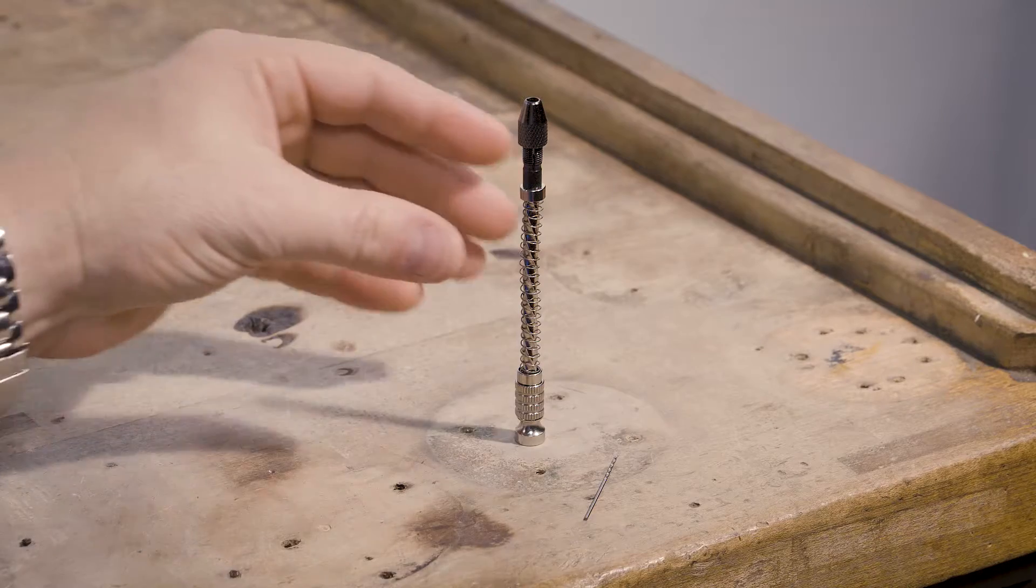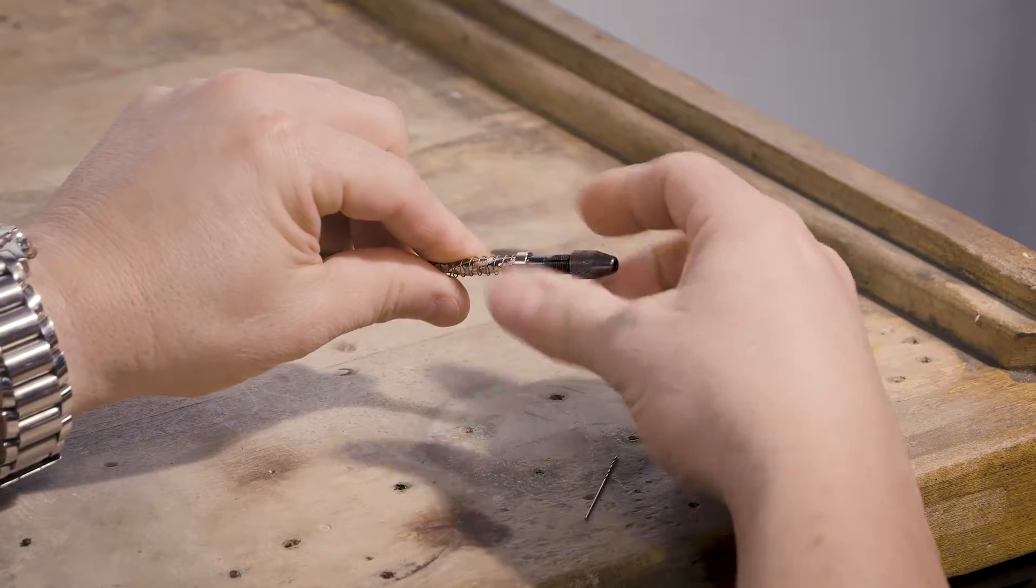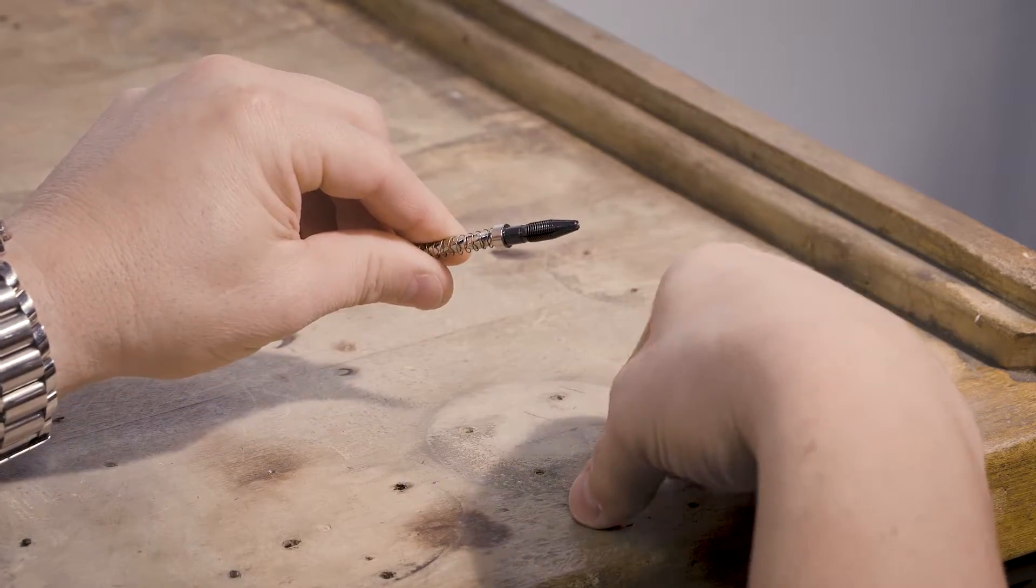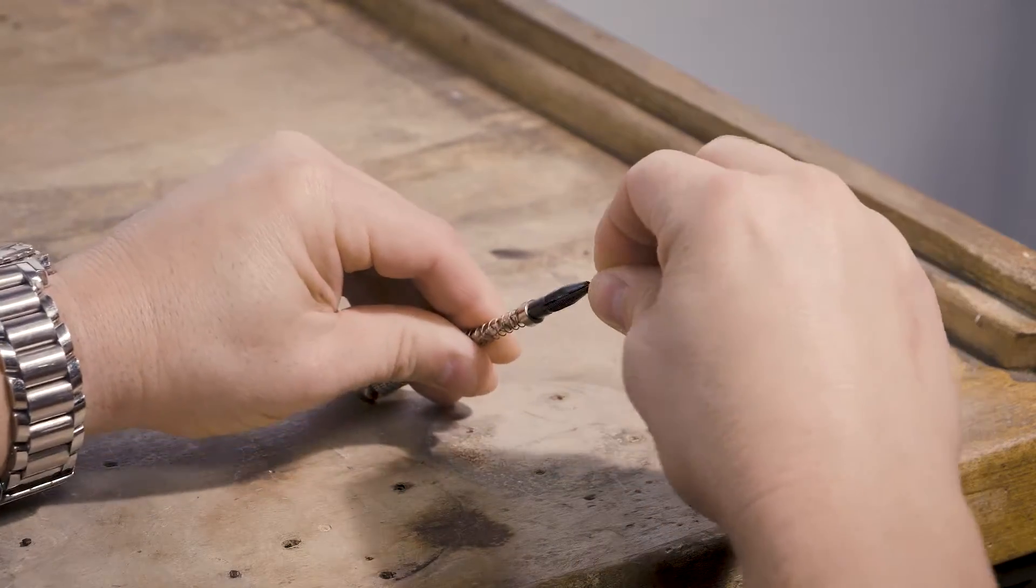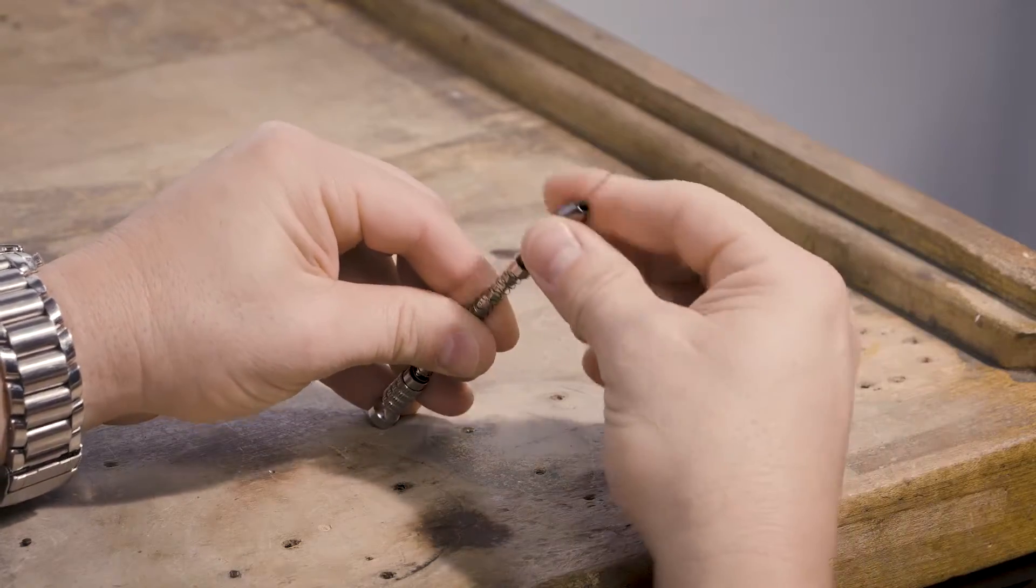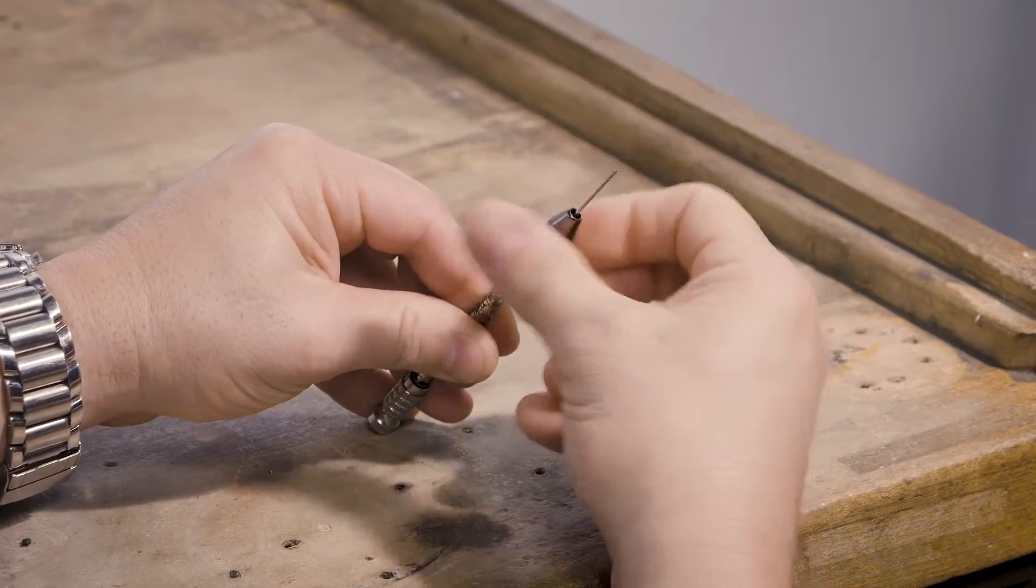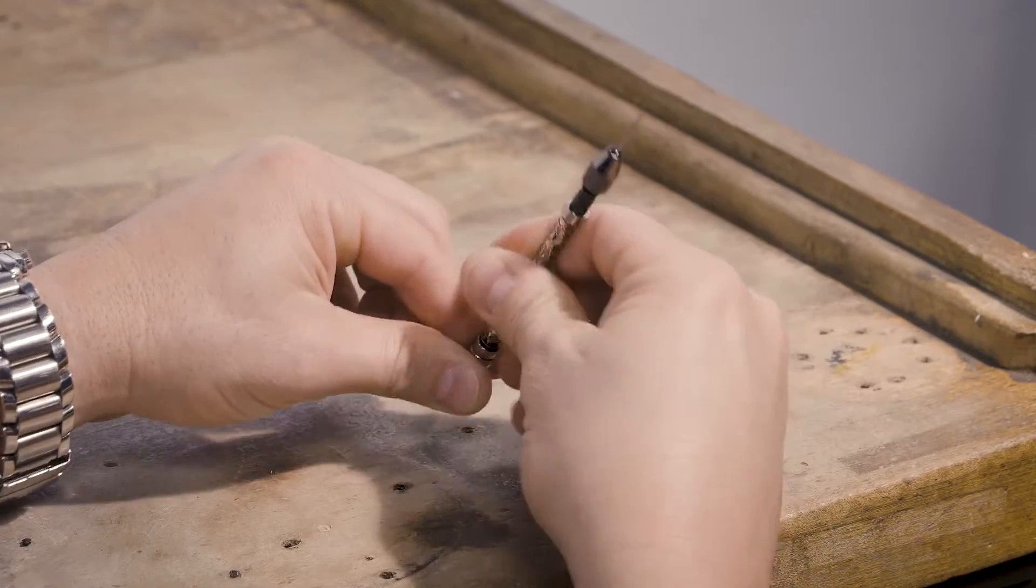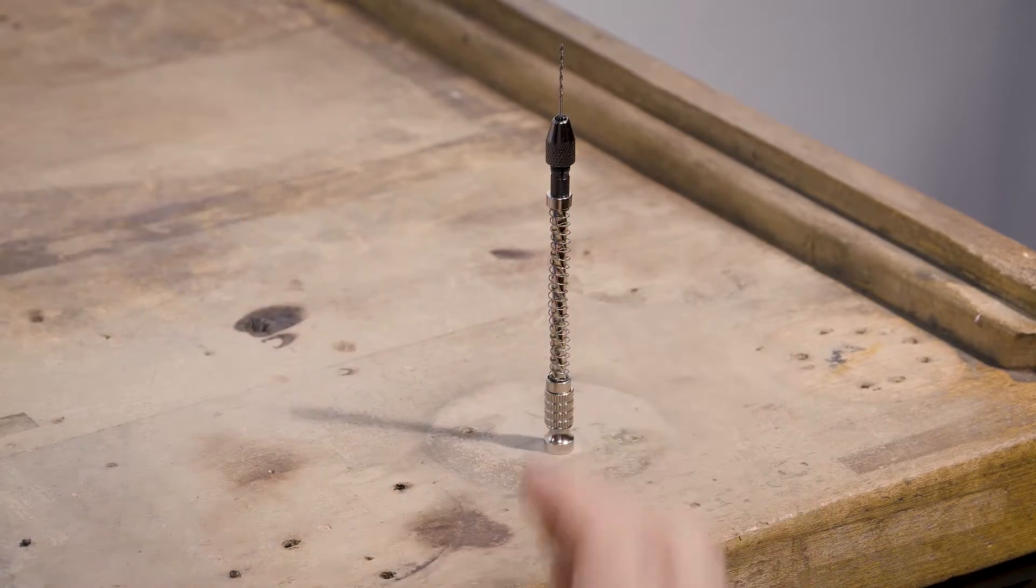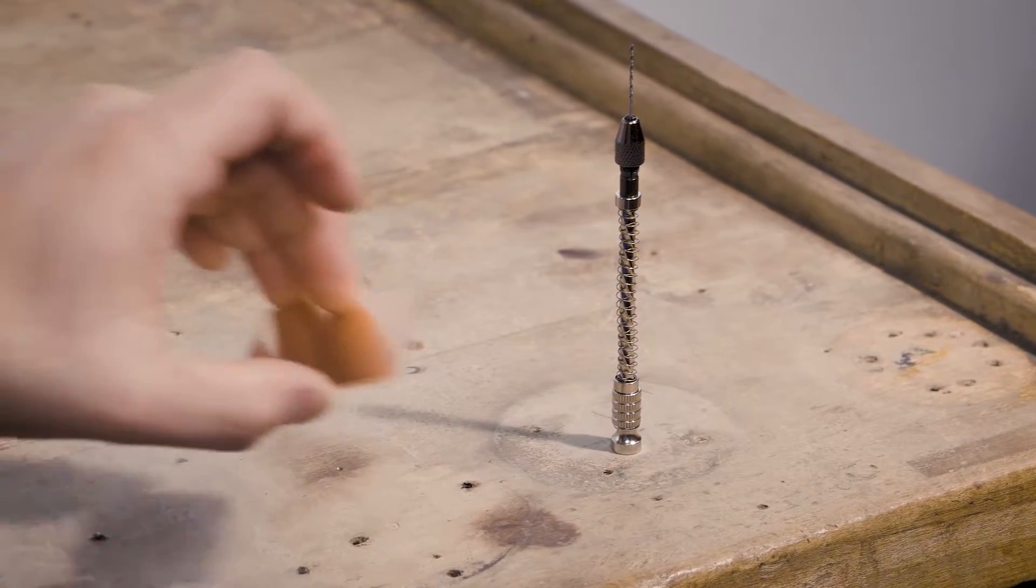First thing you want to do is install your drill bit. So I will unscrew this, take my drill bit and install it into the collet and then screw the top back on tightly. I will demonstrate with a brass sheet.